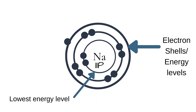In previous years we learnt that electron shells are areas around the nucleus where electrons spend most of their time. We assumed that the electrons all move around the nucleus within each shell, but in actual fact the electrons within each shell tend to stay within certain areas. These areas where the electrons are found are called orbitals.